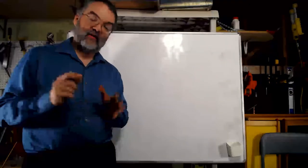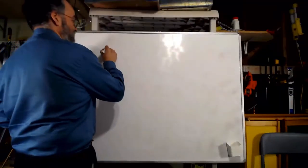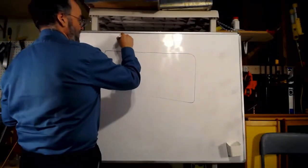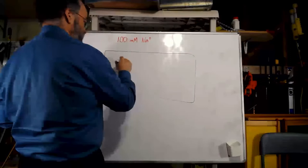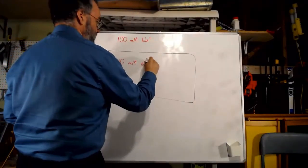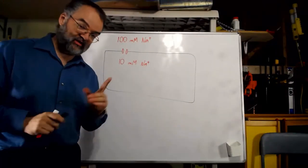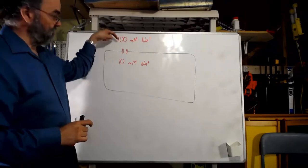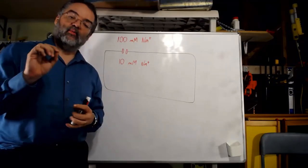We've now spent some time talking about things that can affect the movement of ions across the membrane. Specifically, we talked about how diffusion can affect the movement of ions into and out of a cell. For example, if I set up a cell with a sodium concentration of 100 millimolar outside and 10 millimolar inside, with a sodium channel, diffusion tends to go from high to low concentration, so most sodium movement would be inward.